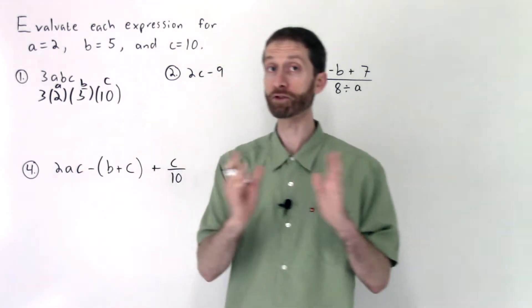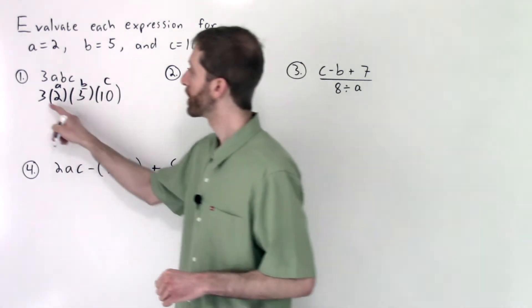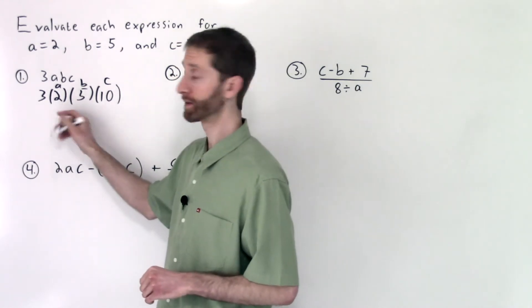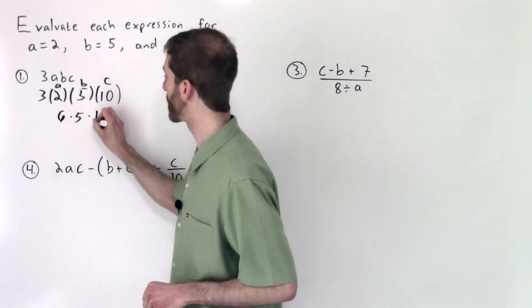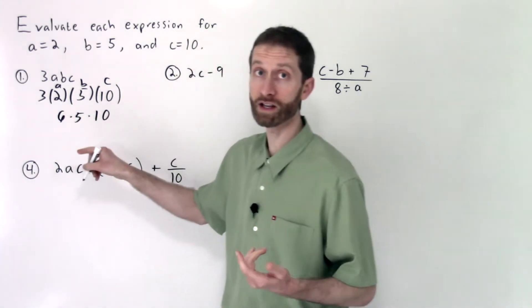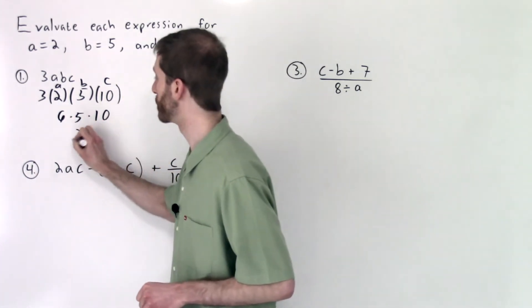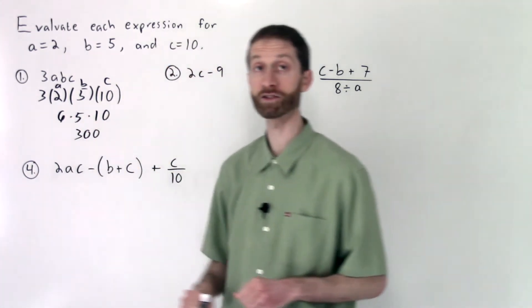Now we multiply from left to right using order of operations. 3 times 2 is 6, times 5 times 10. 6 times 5 is 30, times 10 is 300 when you do it all out. That's our answer to number one.